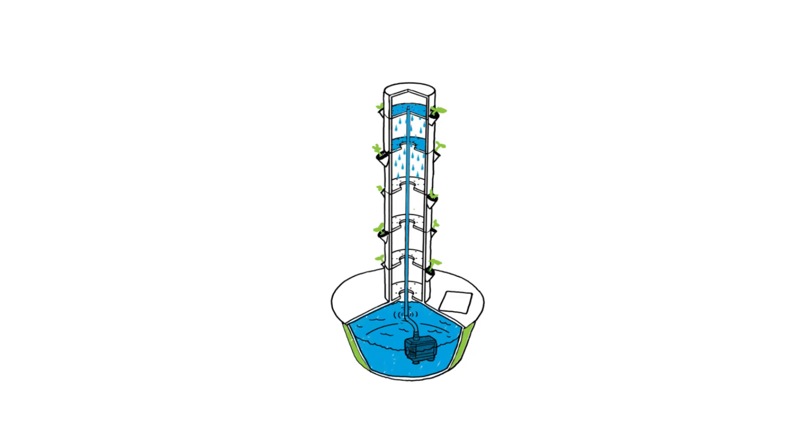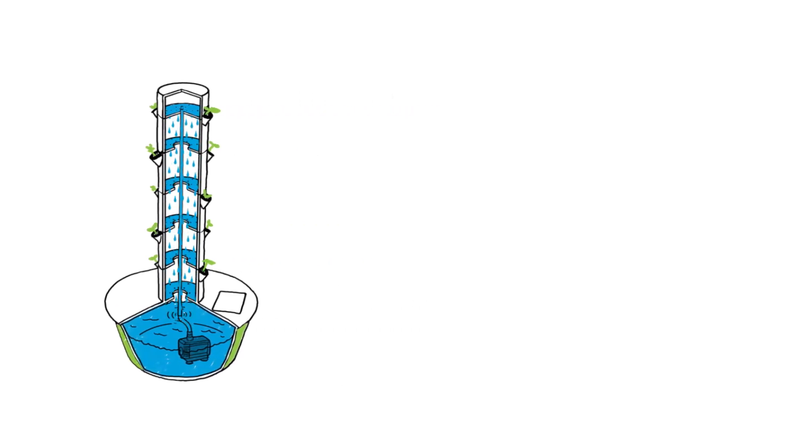From there, the nutrient solution drips through the central tower using a special device that evenly cascades the solution over the exposed plant roots.